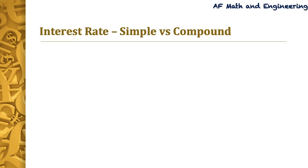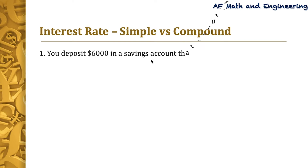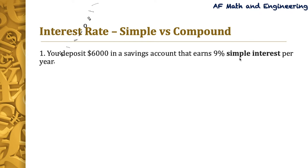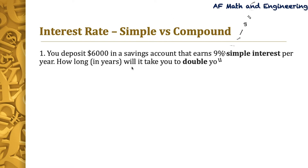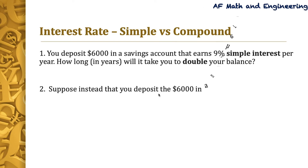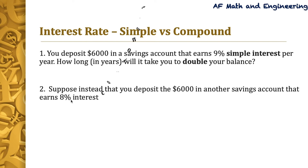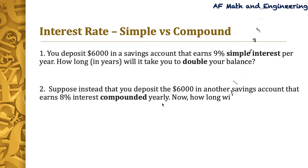We have two questions. Question number one: you deposit $6,000 in a savings account that earns 9% simple interest per year. How long in years will it take you to double your balance? Question number two: suppose instead that you deposit $6,000 in another savings account that earns 8% interest compounded yearly. How long will it take you to double your balance?